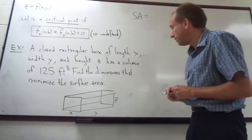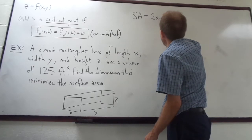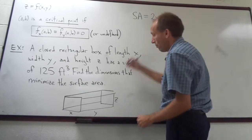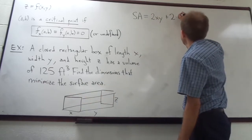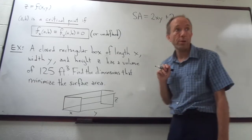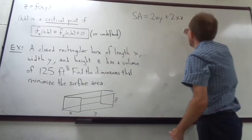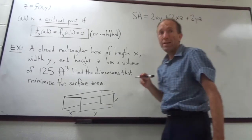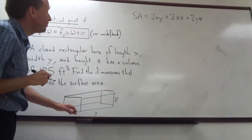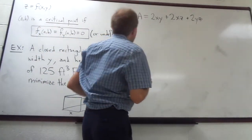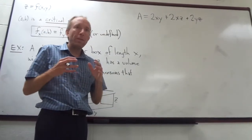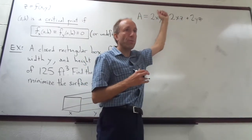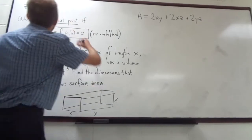The top and bottom each have area x times y — those are two rectangles. The front and back faces have dimensions x by z, so there are two of those. The left and right sides have area y times z, and there are two of those. So our surface area equation A = 2xy + 2xz + 2yz. One problem with this formula is that it has three variables x, y, and z, but we're mostly studying functions of two variables in this section.